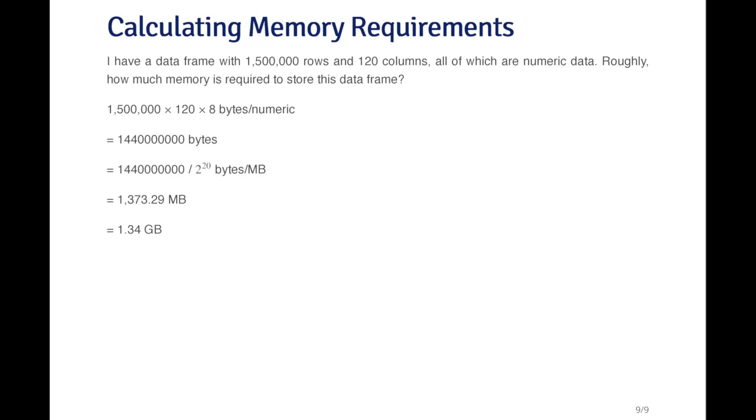So I can do a simple calculation. The number of elements in this data frame is going to be 1.5 million times 120, because it's a square object. So that's the number of elements in the data frame. Now if all the data are numeric, then each number requires 8 bytes of memory to store because the numbers are stored using 64-bit numbers and there's 8 bits per byte. So that's 8 bytes of memory per numeric object.